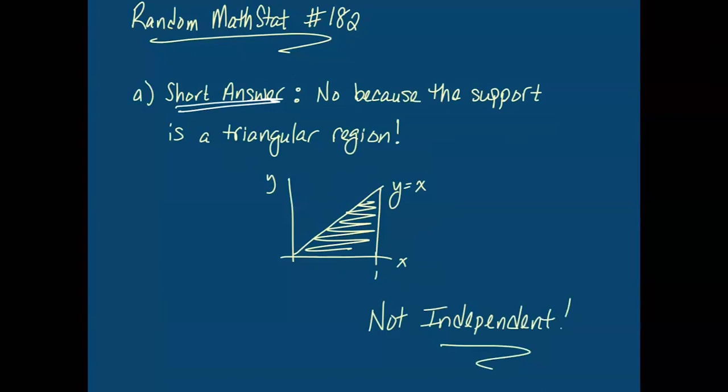Remember, we proved in class that you have independence if you can factor the joint PDF into an X part and a Y part, including the indicators, which means the region needs to be rectangular.